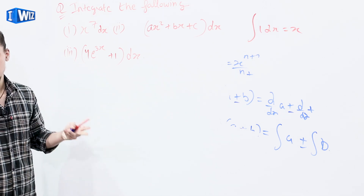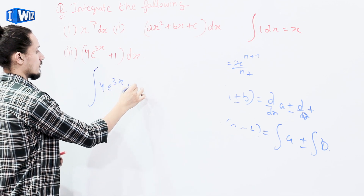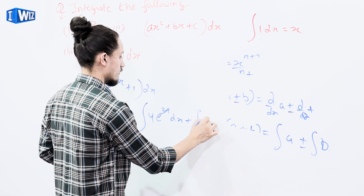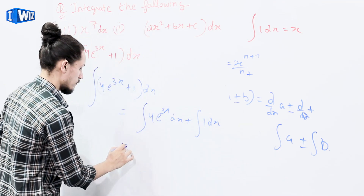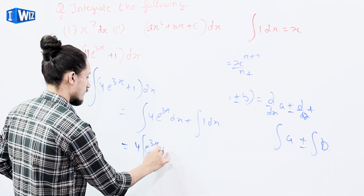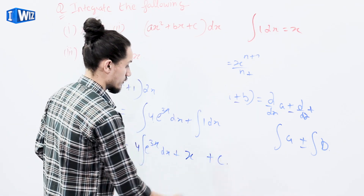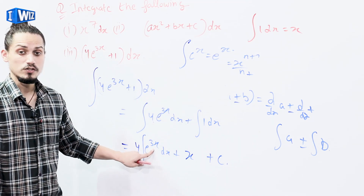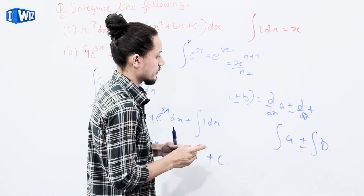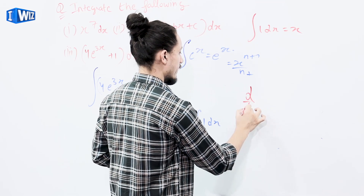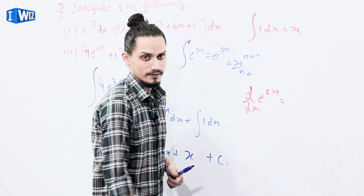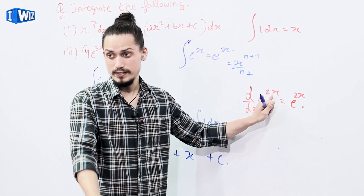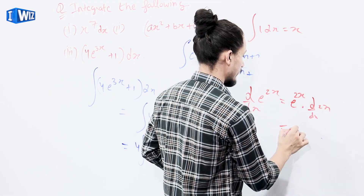Next function: 4e^(3x) + 1. Integration of 4e^(3x) + 1 dx splits into integration of 4e^(3x) dx plus integration of 1 dx. There's a small trick from differentiation: d/dx of e^(2x) gives e^(2x) multiplied by the derivative of the power 2x, which is 2 — giving 2e^(2x). Similarly, d/dx of sin(2x) gives cos(2x) multiplied by d/dx(2x), giving 2cos(2x).